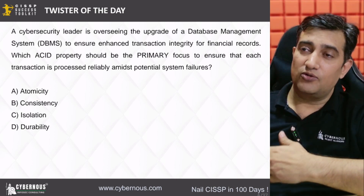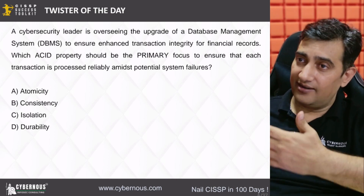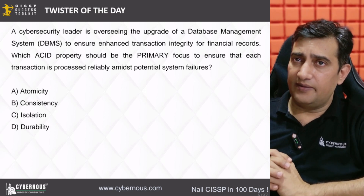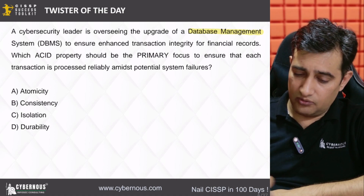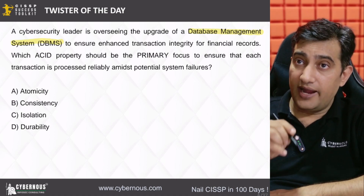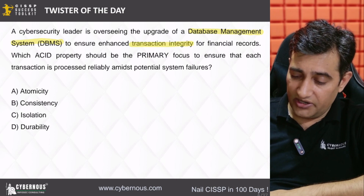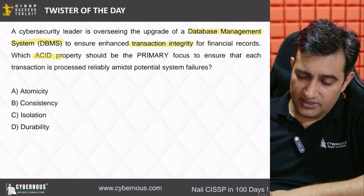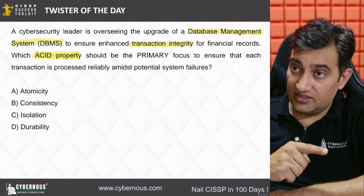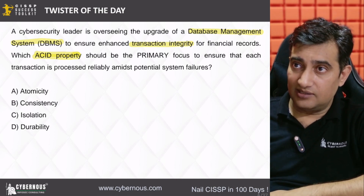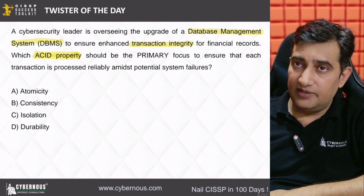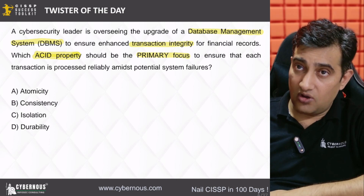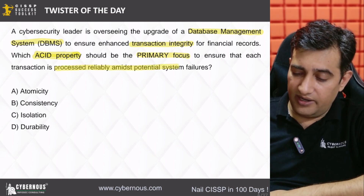I hope by now you might have found out the right answer. Let me explain this question so you can cross-check your answer. This question relates to a database management system to ensure enhanced transaction integrity — that is one keyword — for financial records. Which ACID property should be the primary focus to ensure that each transaction is processed reliably amid potential system failures?